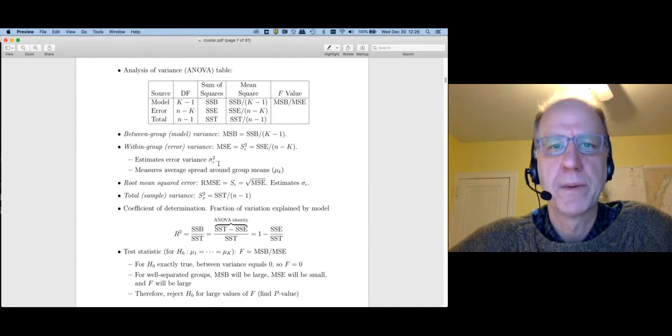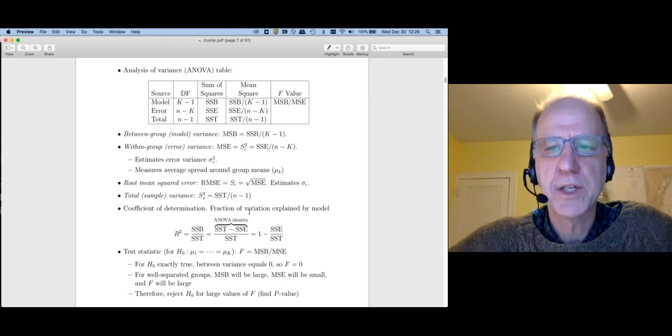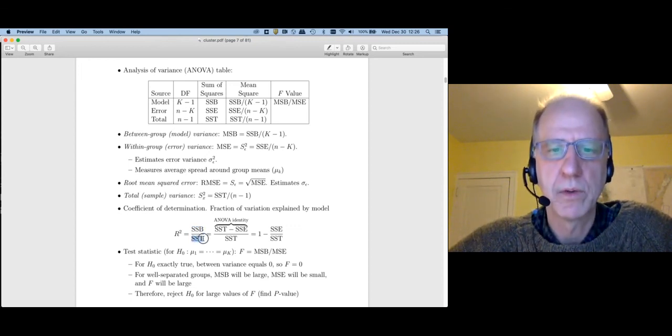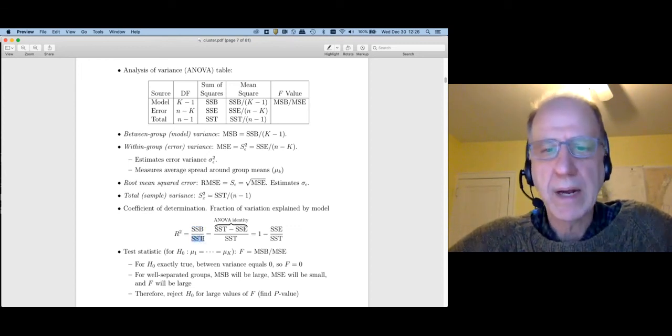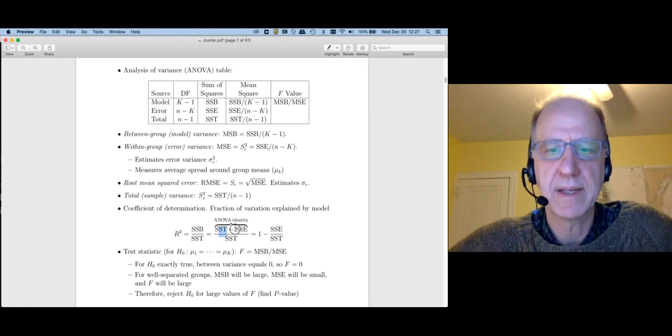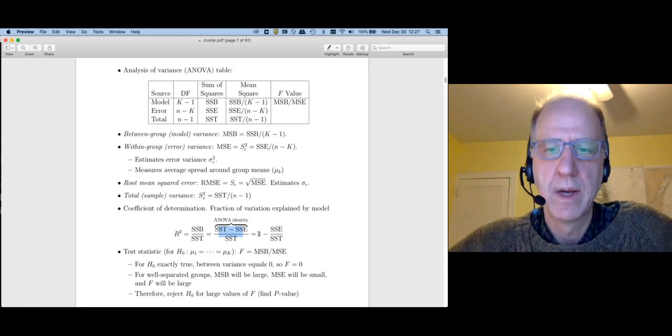I'll just mention a few other properties that come out of this. R-squared is the fraction of variation explained by the model. So that is the between group sum of squares over the total group sum of squares. Often we write this a different way though. So using the ANOVA identity, we can solve for SSB. That's SST minus SSE over SST. Of course, SST over SST is one. So you can think of this as one minus the fraction of variation unexplained by the model, which is SSE over SST.